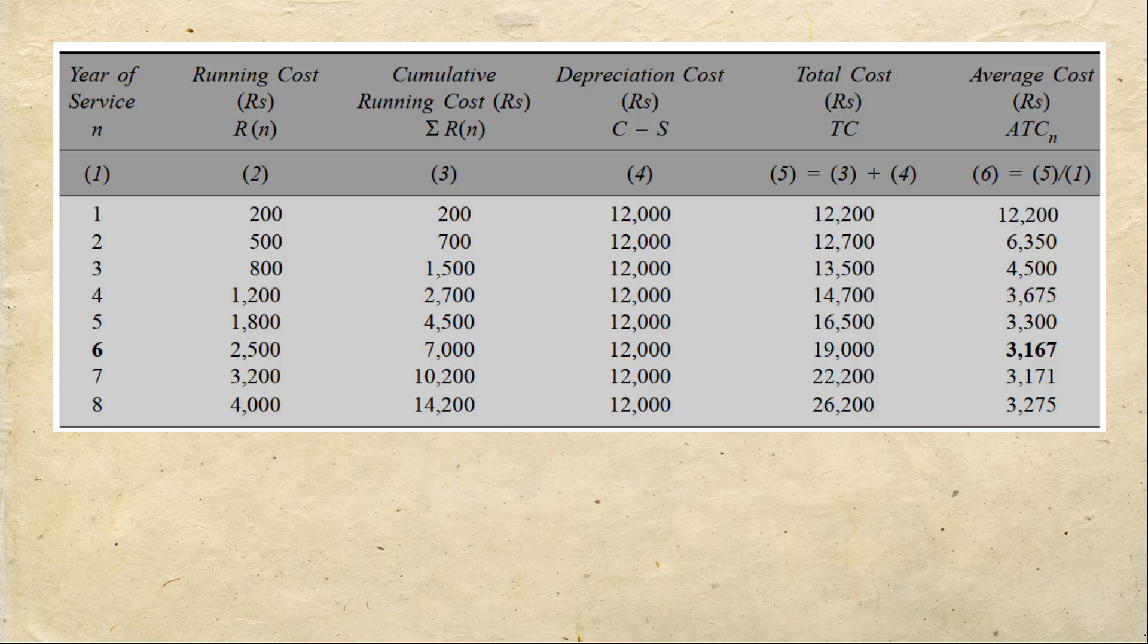You calculate the total cost for each year, the depreciation cost plus the cumulative running cost, and you have the values in column 5. In column 6 you get the value by dividing the values in column 5 with the years in service. In the first year, it's 12,200 divided by 1, which makes it 12,200. In the second year, 12,700 divided by 2 makes it 6,350. In the third year, 13,500 divided by 3 makes it 4,500 rupees. We find in the last column of average total cost there is a minima in year number 6.